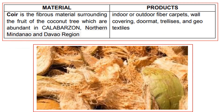Another material is coir. It is a fibrous material surrounding the fruit of the coconut tree, which is abundant in Calabarzon, Northern Mindanao, and Davao region, or in some other places of the country. Products include indoor or outdoor fiber carpets, wall coverings, doormats, trellises, and geotextiles.